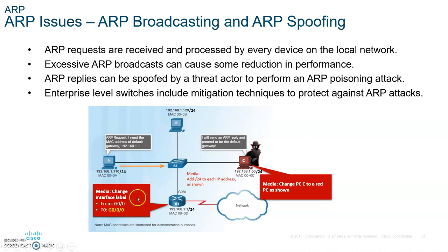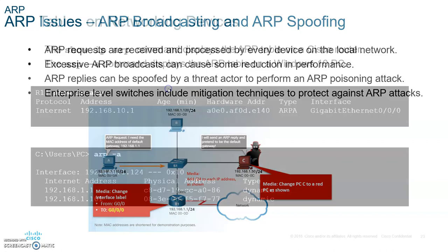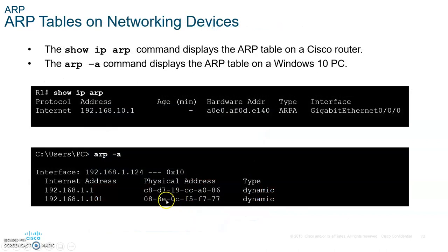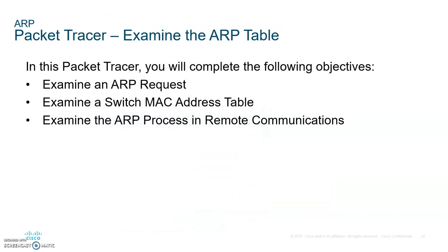But what somebody can do is go in there and change the MAC address in the cache. That's called ARP spoofing. We'll discuss that some other day — we don't have to worry about it for now.